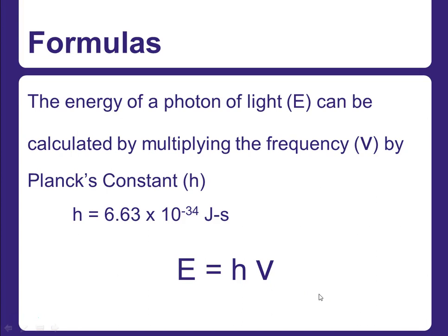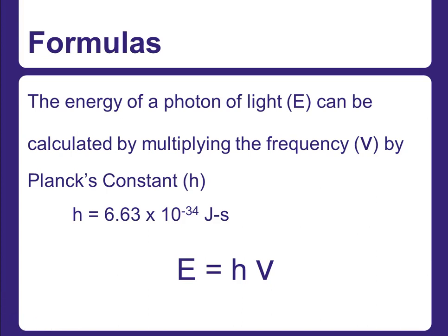We can also calculate the energy of a photon of light. It's calculated by multiplying the frequency — Greek letter nu — by Planck's constant, represented by the letter h. Planck's constant is 6.63 times 10 to the minus 34 joules times seconds. Joules is a unit for energy and seconds is a unit for time. The equation is E equals h times nu. We'll spend more time on this later this week, but it's in your lab handout, so I'm highlighting it here.